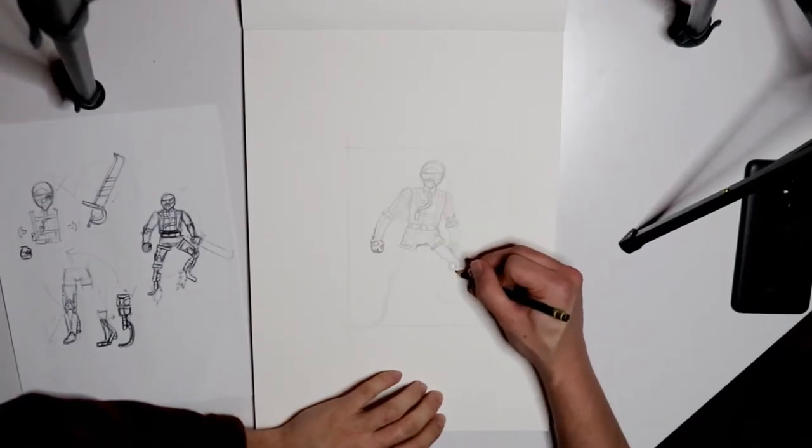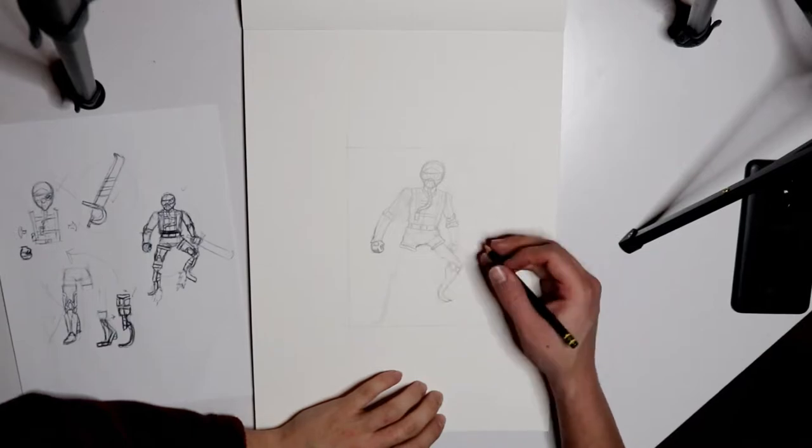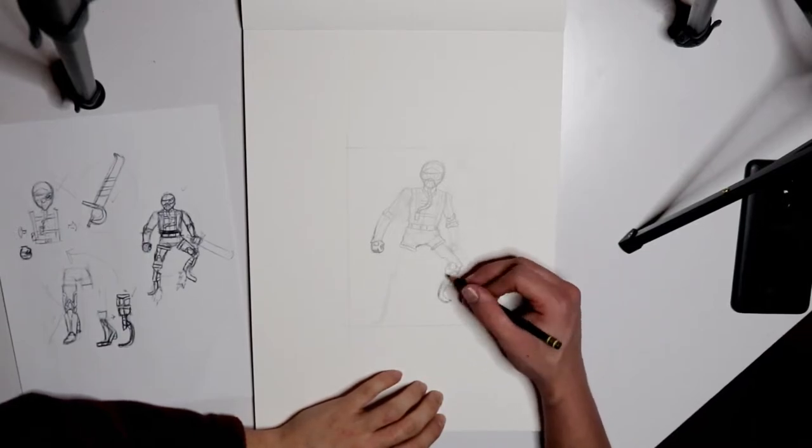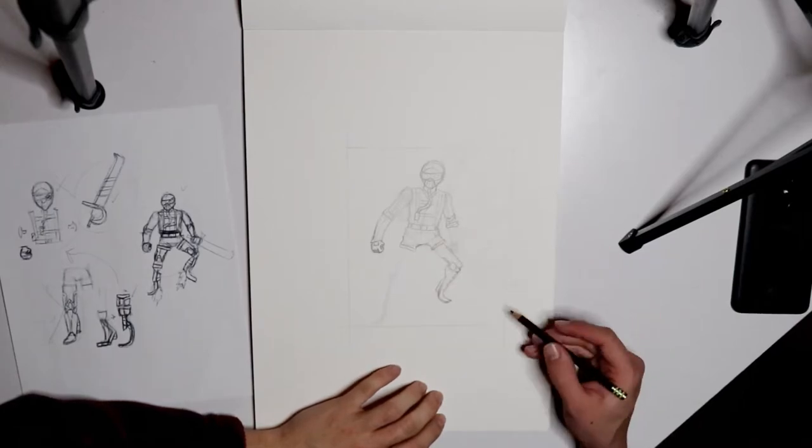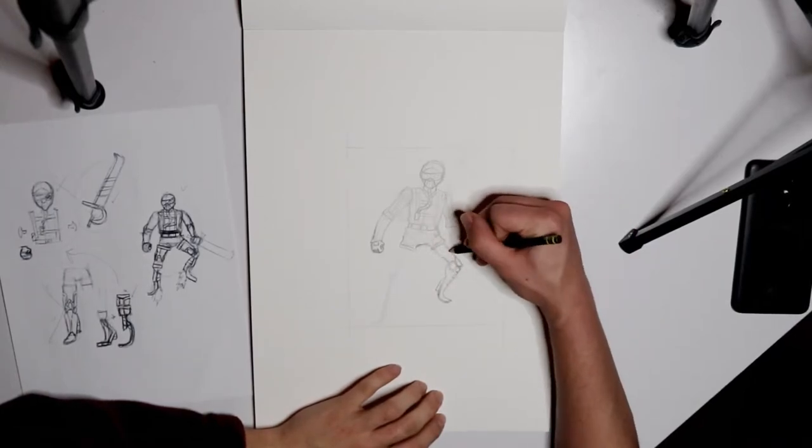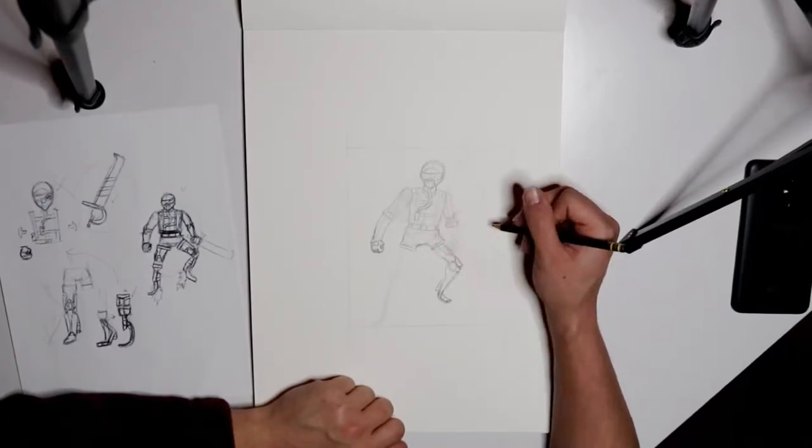You can even see on the pen sketch sheet to the left, you can see a bunch of little check marks and even an X over something I didn't like. So just sort of combining things that work and leaving behind the things that don't are a vital part. And that's all just pre-planning.